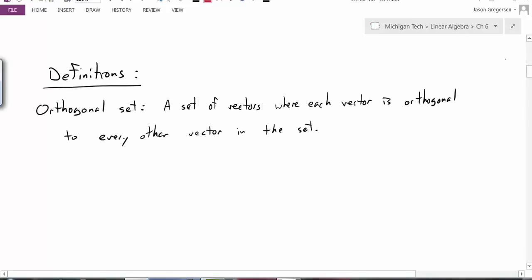Our first definition would be for an orthogonal set. We've already talked about orthogonality between vectors and even how a vector can be orthogonal to a set, but now what is an actual orthogonal set? Well, the definition says it's a set of vectors where each vector is orthogonal to every other vector in the set. So in other words, if we have a set of vectors u1, u2, and u3, for instance, this would be a set of vectors.